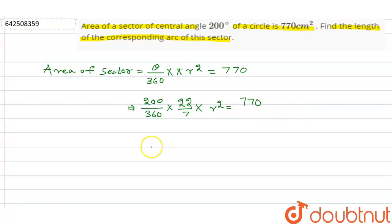Now 10 and 10 cancel out. This is equal to, if this is 10 then this is 18. Then r square is equal to 770 into 7 into 18 divided by 10 and 22. Now this is equal to 77...